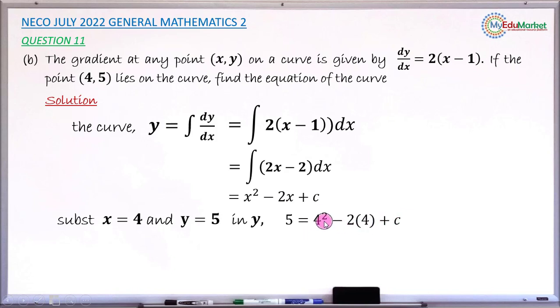So simplifying this, 4 squared would be 16, 2 times 4 would be 8. So you have 16 minus 8. So you now have 5 equals 16 minus 8 plus c. So collecting like terms, 16 minus 8 gives answer 8.